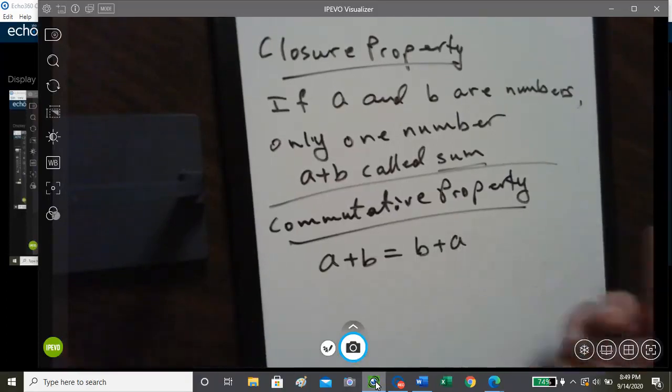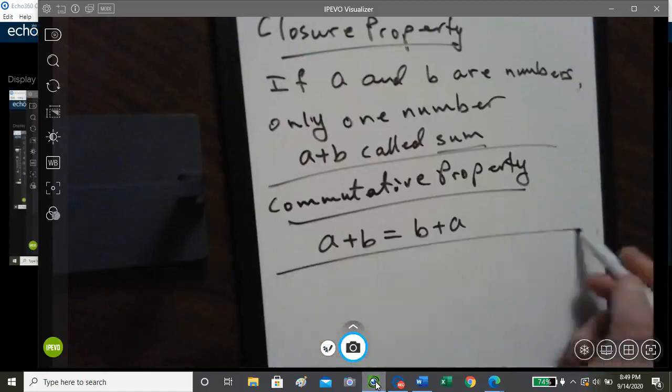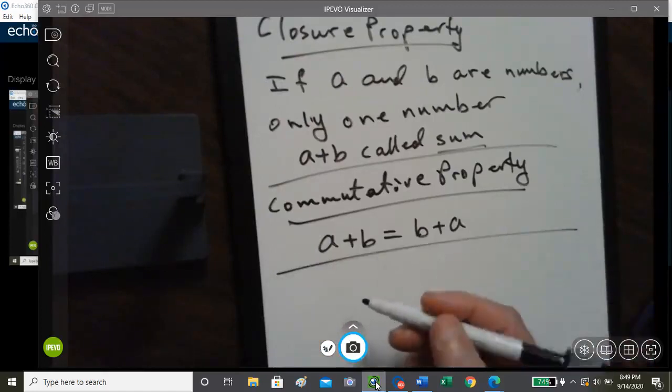So in other words, two plus three is five, and three plus two is five, they're equivalent, and that's the commutative property of Addition.